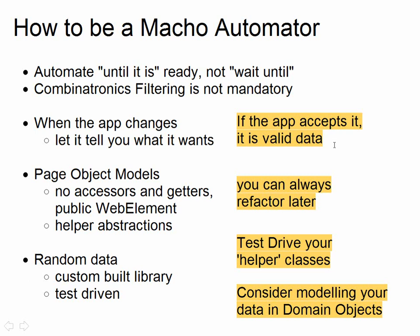My rule is: if the application accepts it, then it's valid data. So if I scrape it off your site and I feed it back in and it fails, that's a valid thing to do. My page object models — I was knocking them out quickly. So I didn't add accessors and getters. I didn't make the web elements private; I just made them public. We just hammered it through.